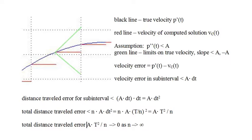Since v sub c of t equals p prime of t at the start of the subinterval, the velocity error is zero at the start of the subinterval. Since v sub c of t is constant on the subinterval, the rate of change of the velocity error equals the rate of change of the true velocity, and that's p double prime. Since p double prime is less than a by assumption, the rate of change of the velocity error on the subinterval is bounded by a. Since the velocity error starts at zero and grows at a rate less than a for the subinterval time of dt, the maximum value it can have is a times dt. The computed distance traveled error for a subinterval is less than the maximum velocity error times dt, and that is a times dt times dt, or a times dt squared.